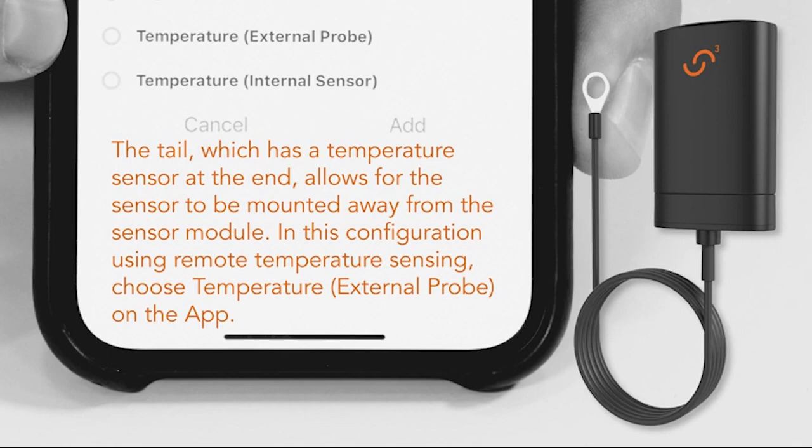The tail, which has a temperature sensor on its end, allows the sensor to be mounted away from the sensor module. In this configuration, using remote temperature sensing, choose Temperature External Probe on the app.